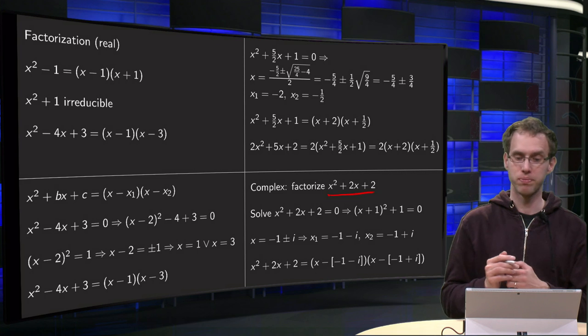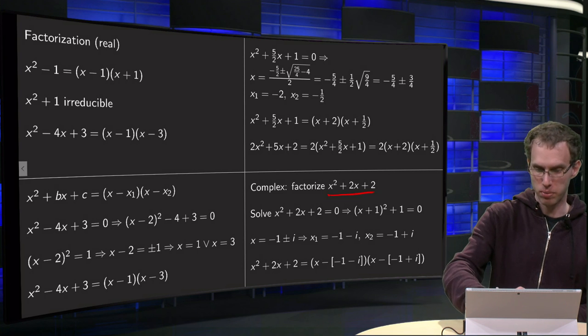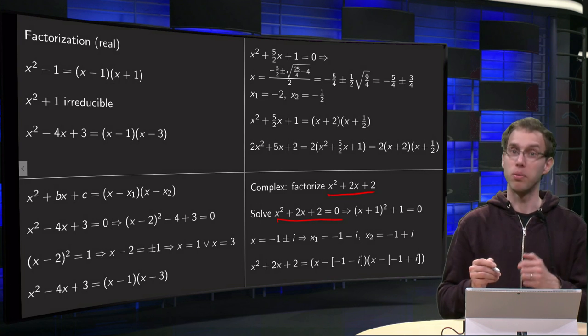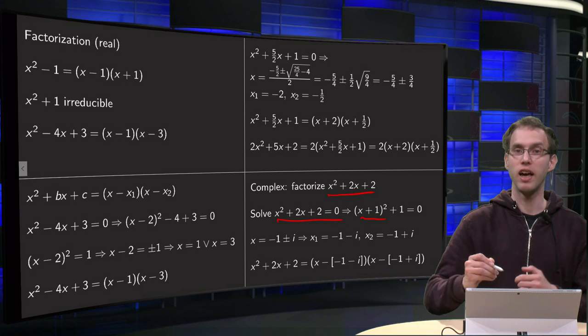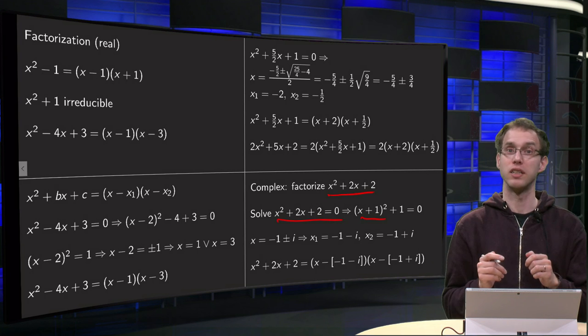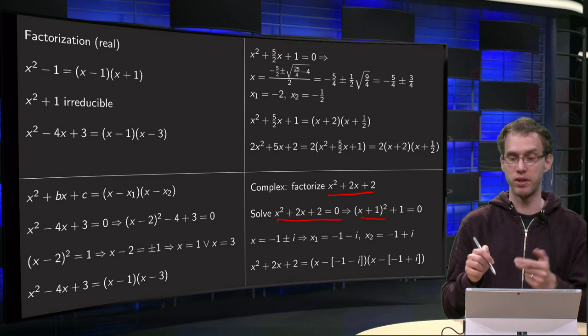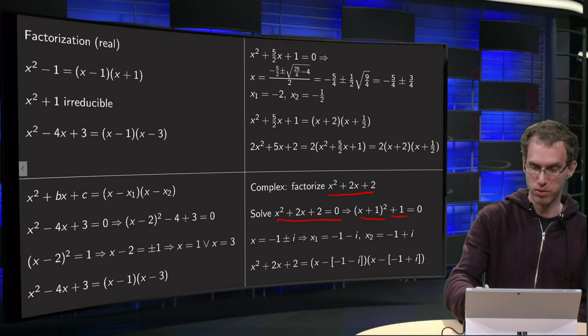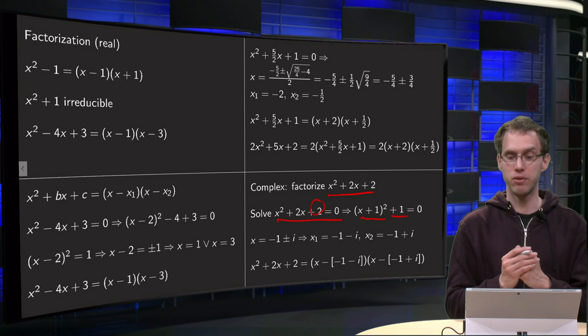Factorize for example x² + 2x + 2. Find the zeros first: solve x² + 2x + 2 = 0. Complete the square, it yields (x + 1)². That's x² + 2x + 1, so it needs another 1 in order to get the 2 over there, equals 0.